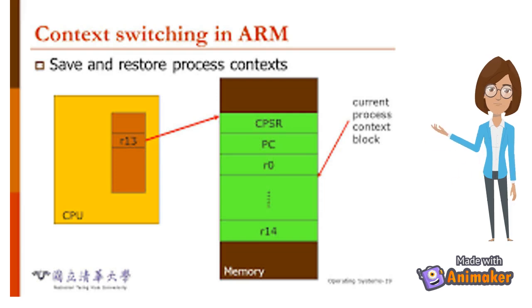After knowing a little about context switching, now we will know how it is done in the operating system. Switching the CPU to another process requires saving the state of the old process and loading the saved state for the new process. This task is known as a context switch.